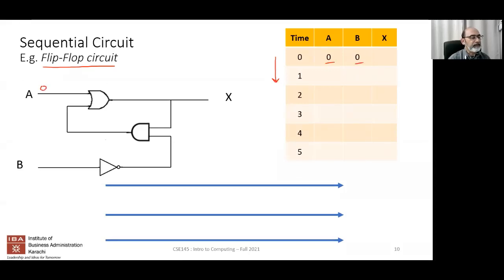We'll start by assuming that A is initially zero and B is also zero. Let's try to figure out what the output X will be in this case. I'd like people to tell me how this will operate. Now, what gate is this?